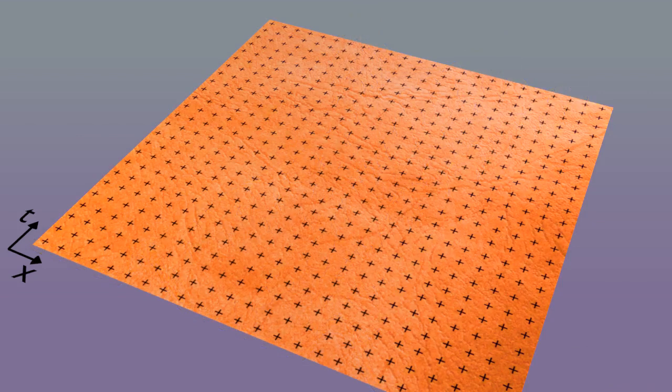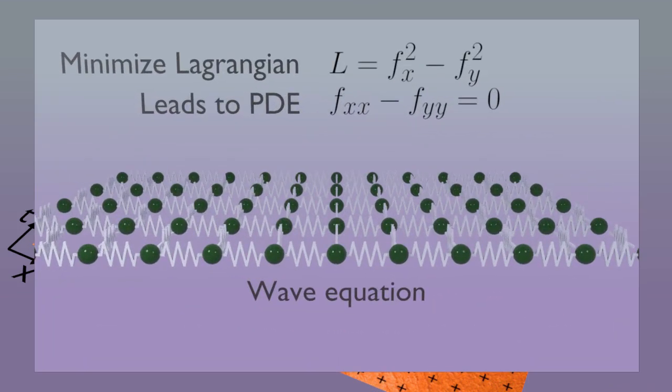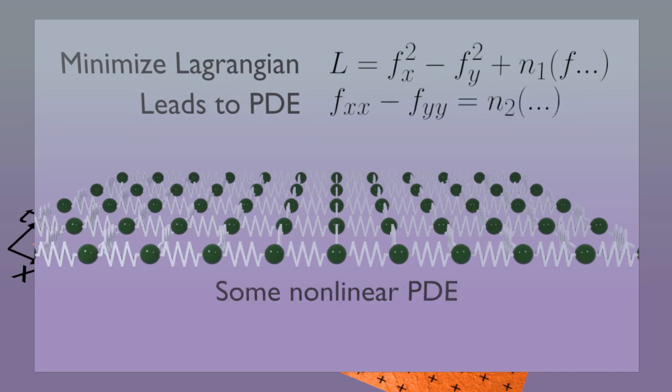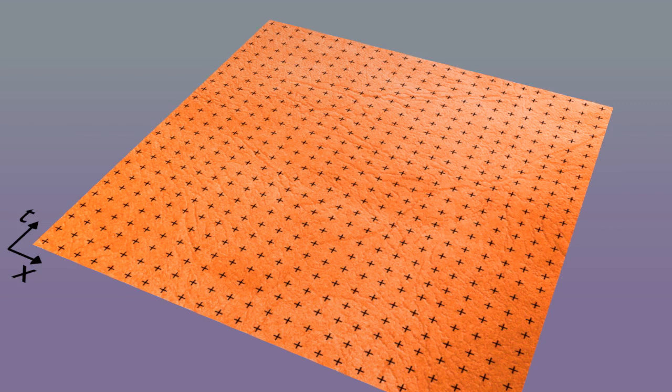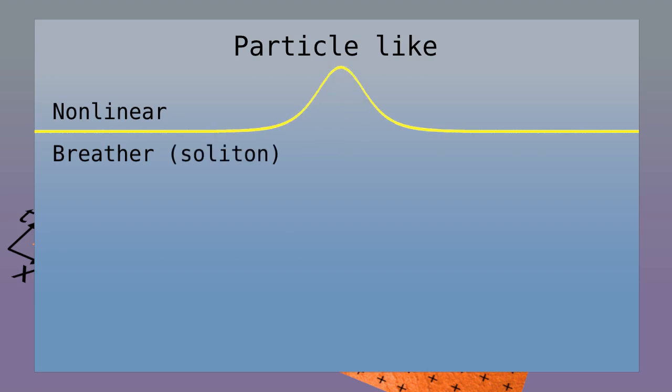Instead of using linear springs, we use non-linear springs. And then the equation also becomes non-linear. Why is this interesting? Well, there are three new phenomena that we get with non-linear springs. The first is that we can get particle-like behavior. Here is a one-dimensional string with a non-linear wave equation, called the Sine-Gordon equation. The solution is called a breather or a soliton. Notice that the energy is trapped in one region of space. It doesn't have to propagate.